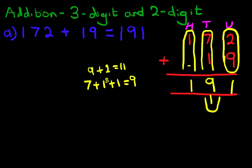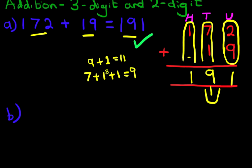So 172 plus 19 is 191. That is correct. So adding the numbers using the vertical format is very easy. Now let's move to our second example. Let's just scroll down so we have a bit more space here.